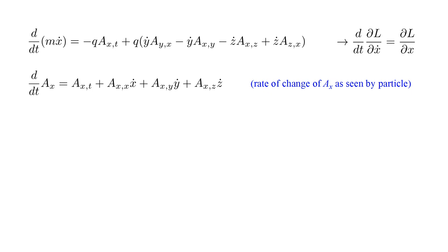A subtle point here is that this expression has two types of time derivatives: D by D T of A_X, and A_X comma T. The first is the total derivative of A_X with respect to time, and the second is the partial derivative of A_X with respect to time. The left side represents how the A_X value seen by the particle changes with time. The four terms on the right represent different ways this can happen. First, at a fixed point in space, A_X can be changing with time — that's the A_X comma T term, the partial derivative of A_X with respect to T, assuming no change in the spatial coordinates. Another way the particle can see A_X changing with time is if A_X changes in space and the particle moves through space — those are the last three terms.